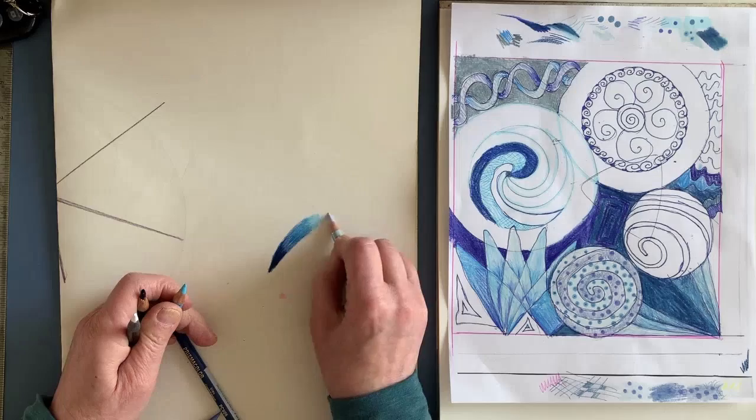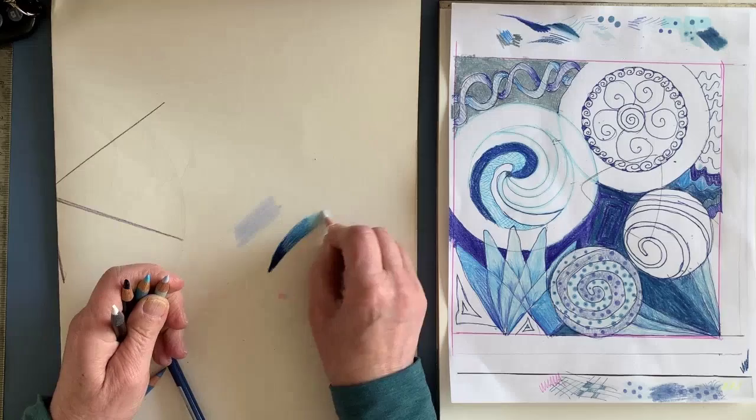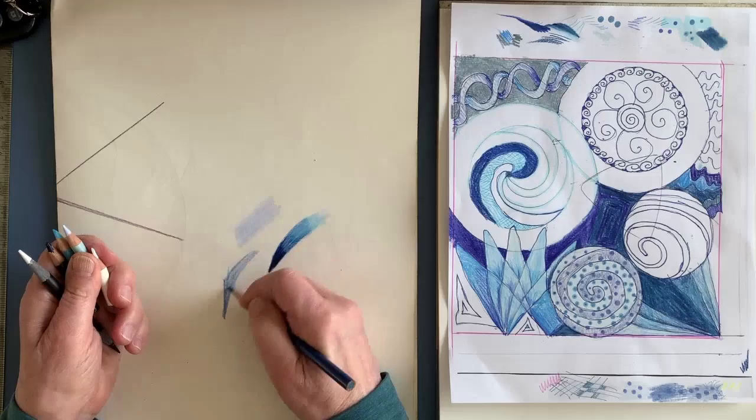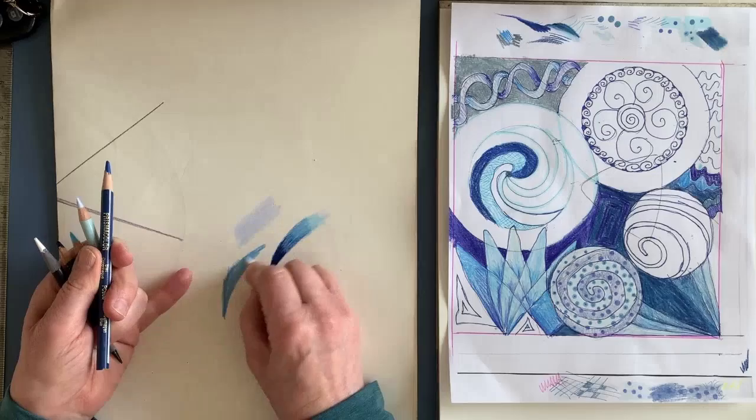Although this blue has got a gray quality to it that I'm not really loving here. And then I can add the white. With colored pencils, layering them will give you some beautiful effects and adding white to them just to my eyes makes them so rich.